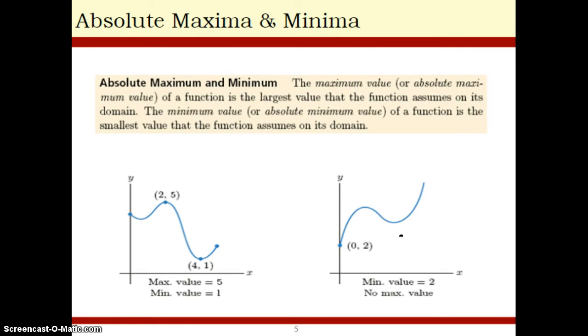Same thing, absolute maxima and minima. Absolute maximum is the absolute highest point on the graph. So in this case, we have two maxima. We have this as a maximum, this is also a maximum. But do you see that this is the highest point on the graph? So this point, 5, y equals 5, would be our absolute maximum. In this point, since this graph continues and extends to y equals infinity, there is no maximum value.